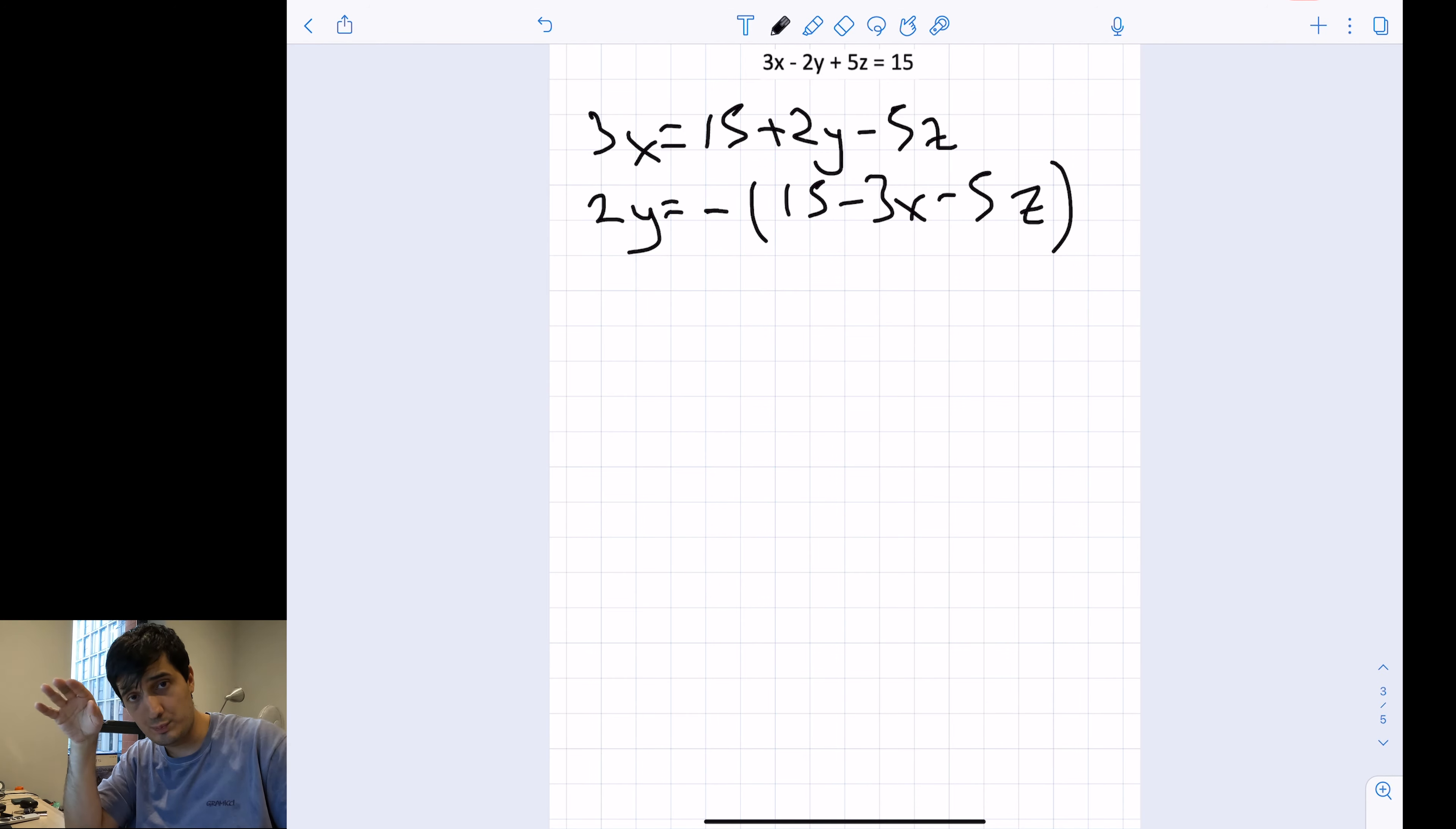Then you can say 2y will equal minus parentheses 15 minus 3x minus 5z. The reason I put the minus and the parentheses is it makes the equation look better. Or you can also say 5z will equal 15 minus 3x plus 2y. You can probably make this more simplified, but there is no need to get into that.